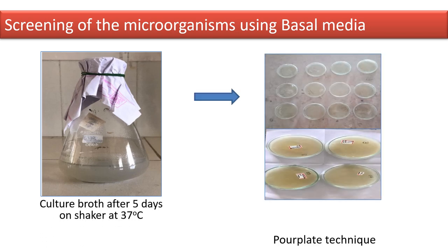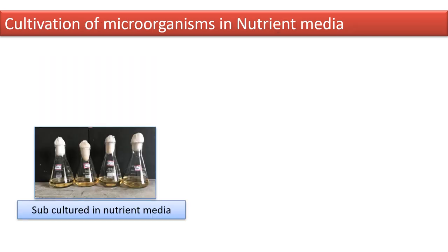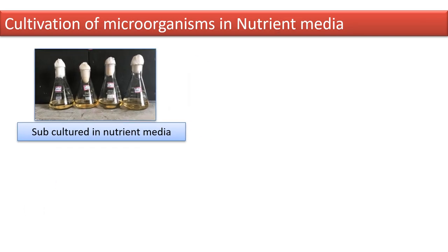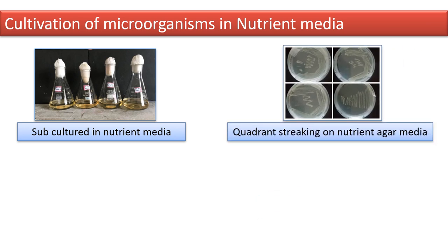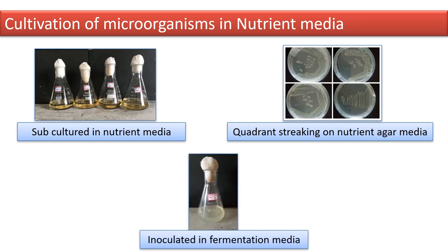Pour plating was done for bacterial growth. After the pour plate technique, parts of the selected plates were scraped off and inoculated in nutrient media for further growth, followed by quadrant streaking to obtain pure cultures. The potential strain was inoculated in the fermentation media.